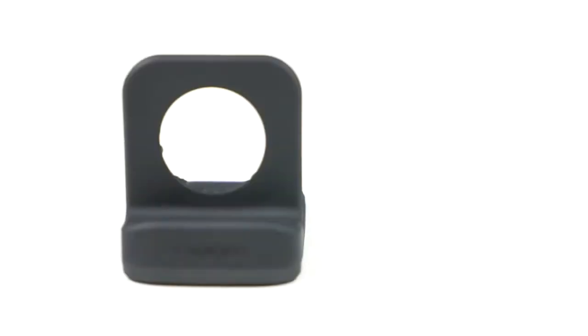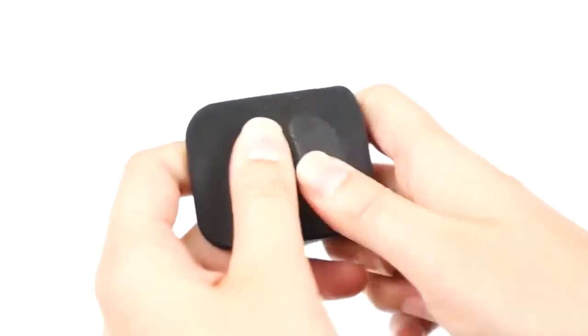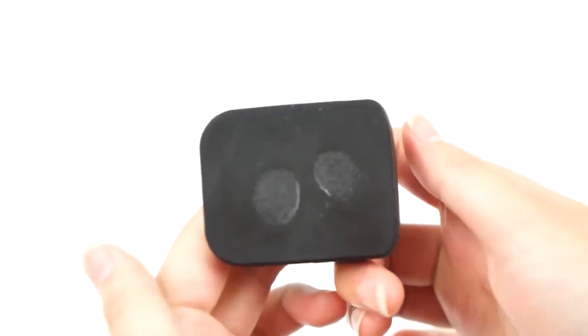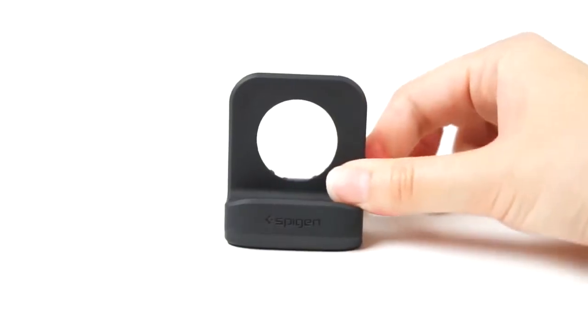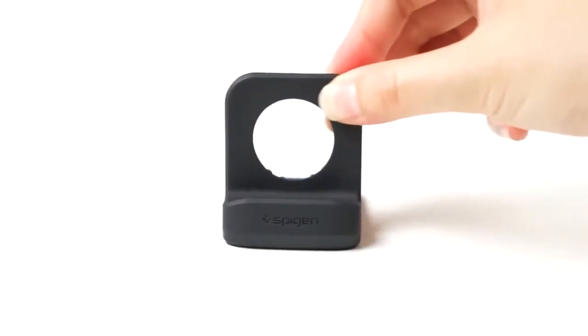The stand is made entirely of TPU so your watch and table stay scratch-free. It features Spigen's trademarked nanotack pad on the bottom, which is made up of tiny suction cups that stick to flat surfaces without any residue. This makes for a stable dock so you don't have to worry about the stand moving or slipping when using it.